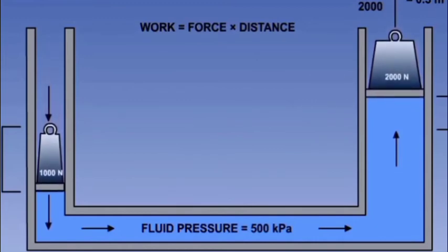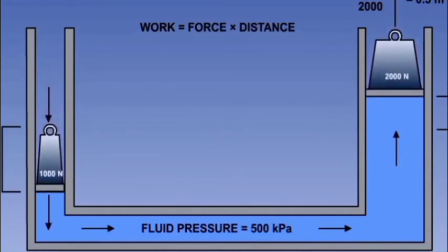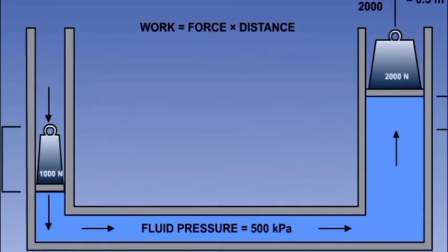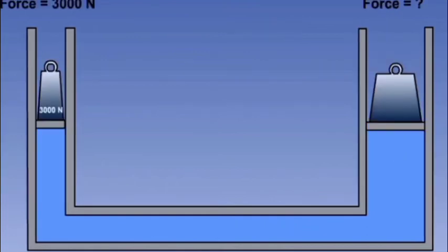Ignoring frictional losses, the same work will be done on piston B. 600 divided by the 2000 newton force equals 0.3 meters, which is the distance observed in piston B. We can now say that for a given piston system, the force is directly proportional to the piston area and the distance moved by the piston will be inversely proportional to the piston area.